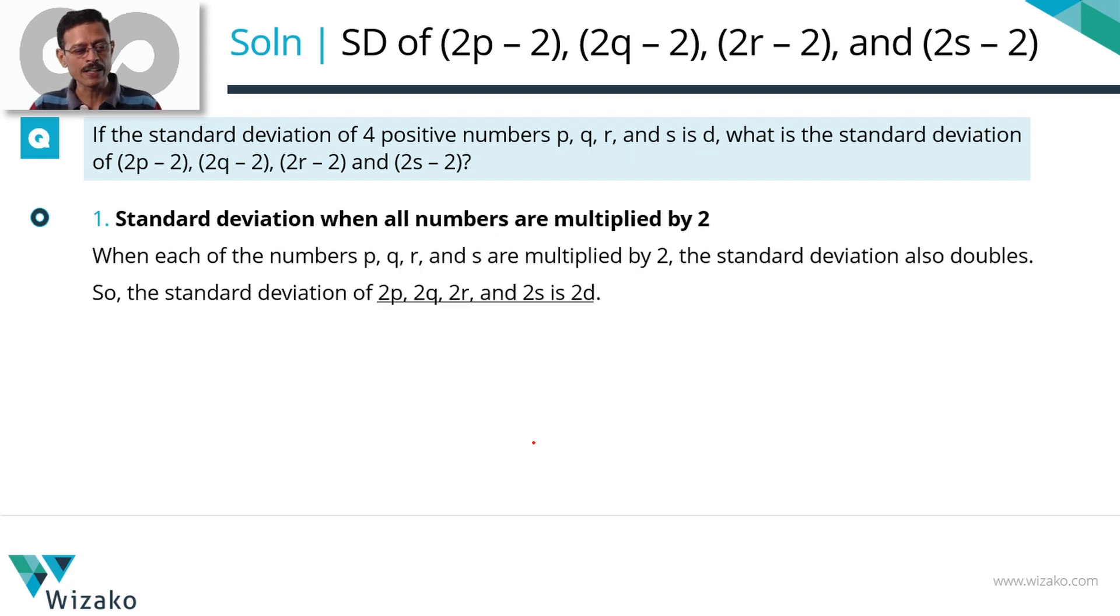Quickly summarize it in printed form. When each element in a set is multiplied by 2, the standard deviation also doubles. So the standard deviation for P, Q, R and S is D. The standard deviation for 2P, 2Q, 2R and 2S will be equal to 2D.